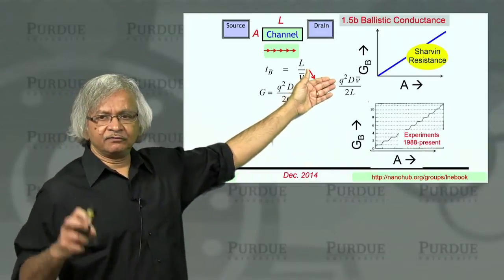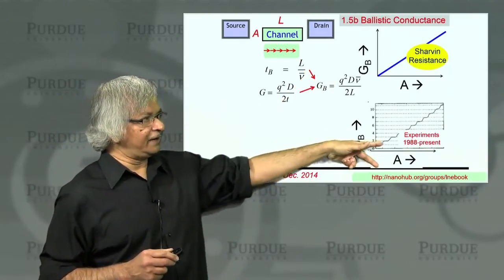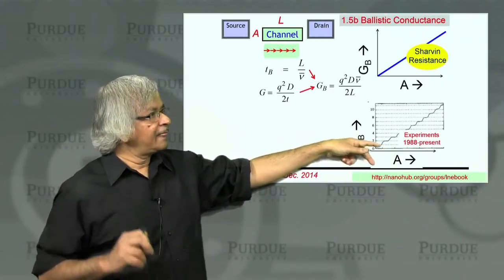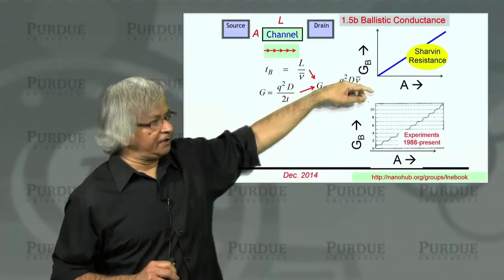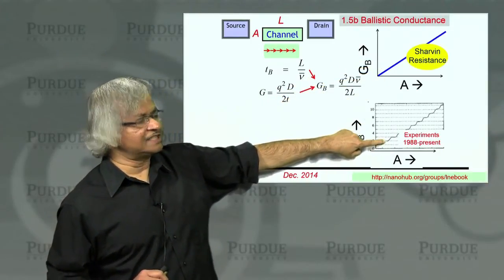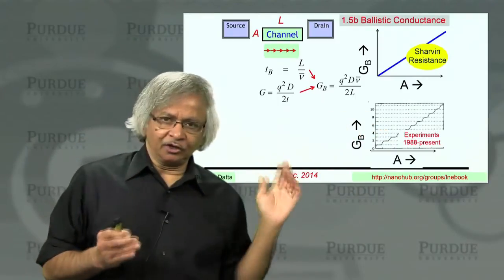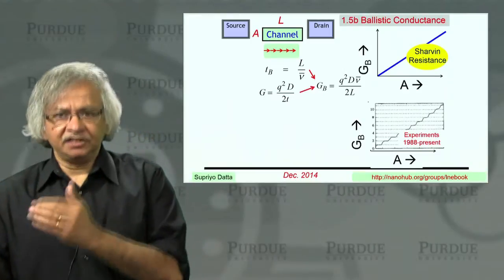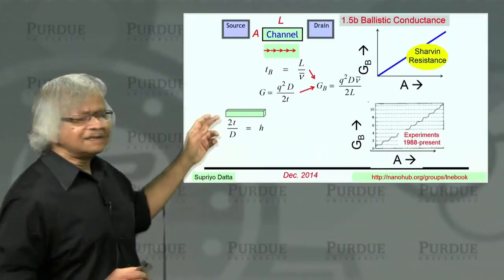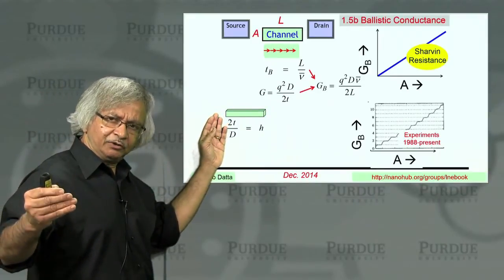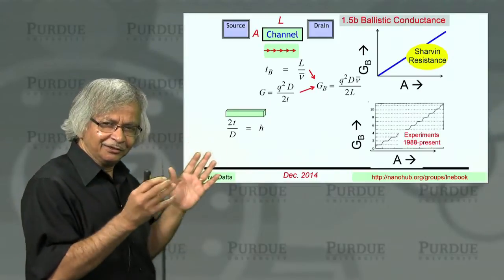What this experiment showed was that if you go to small ballistic conductors, ones where the area is relatively small, then instead of seeing a conductance that goes linearly with area, you'd see something that goes in steps. It's like this quantum of conductance that I'll talk about in a minute times an integer. Now, how do you understand that? Well, this is something we'll talk about more in the next unit. But let me just get ahead of myself for a minute and tell you a little bit about it.